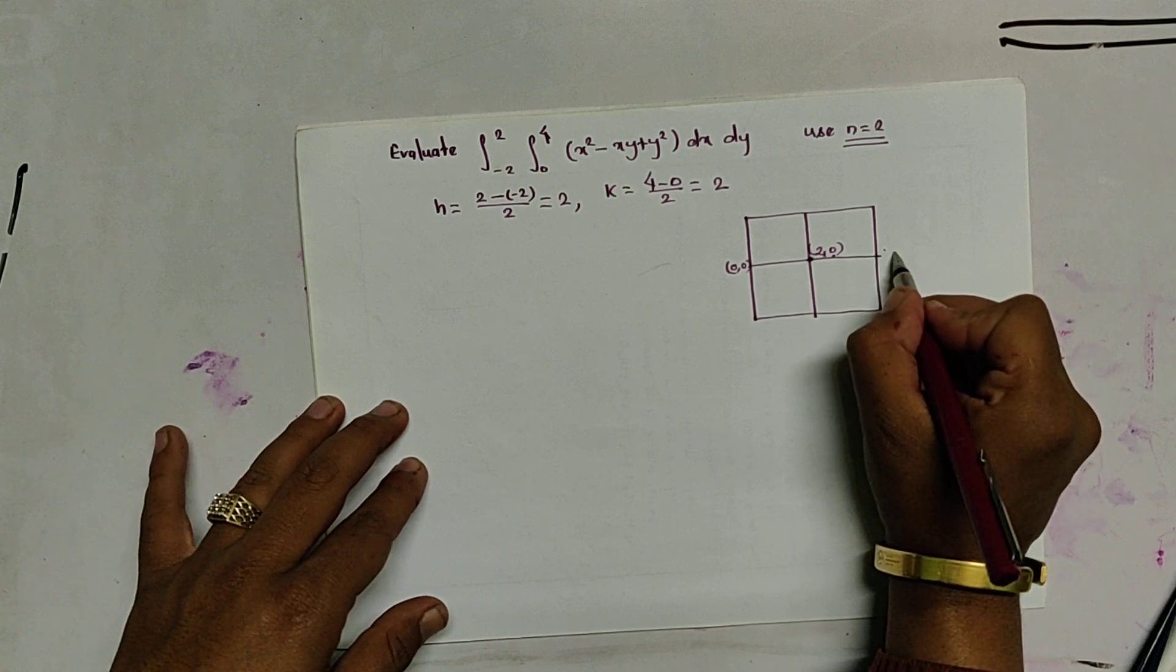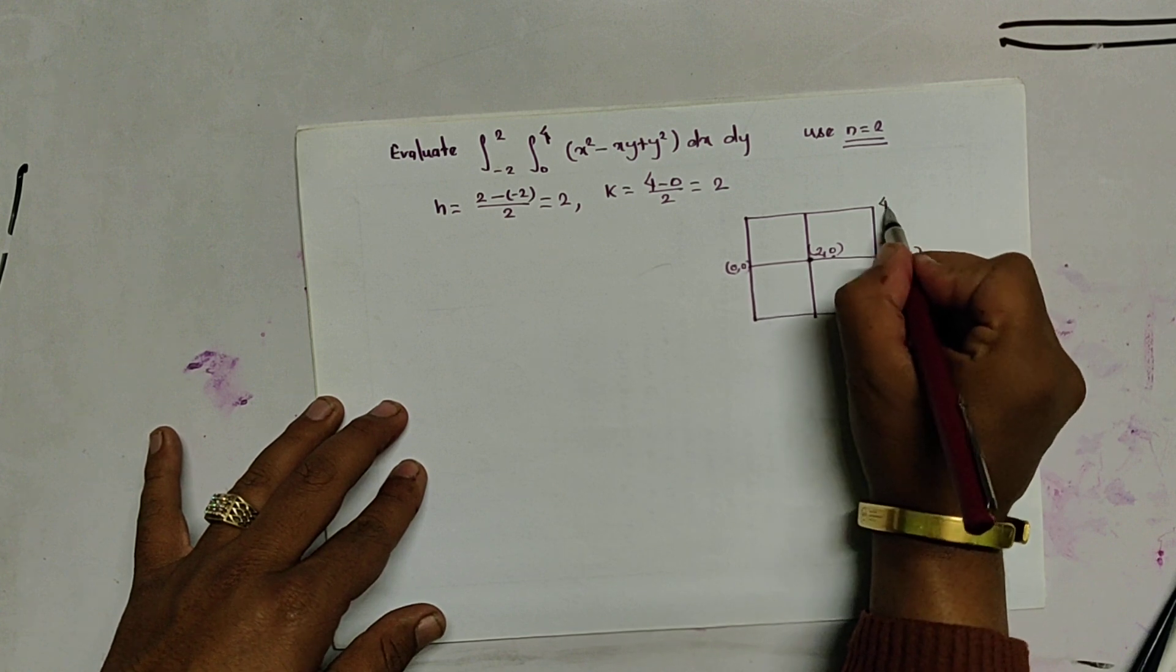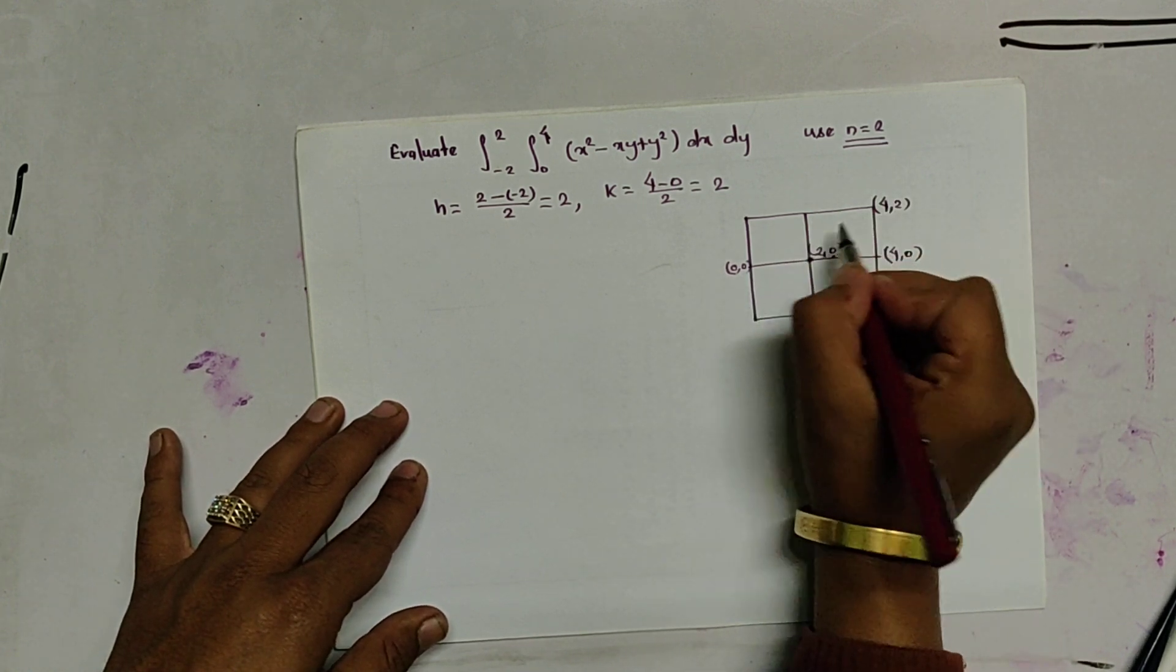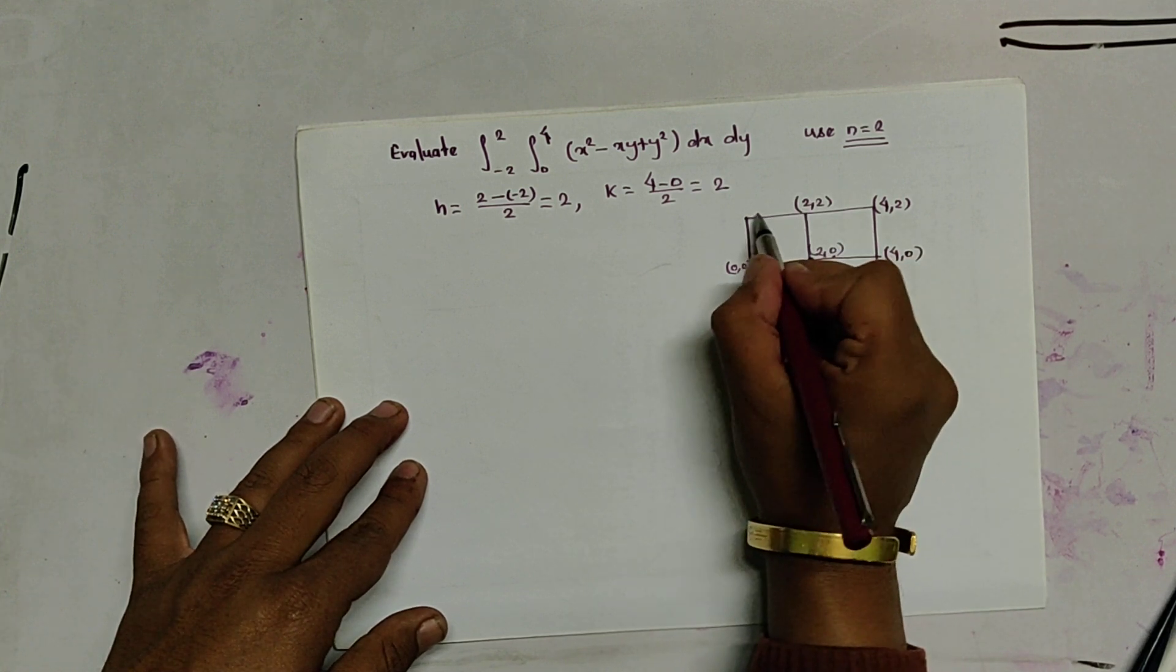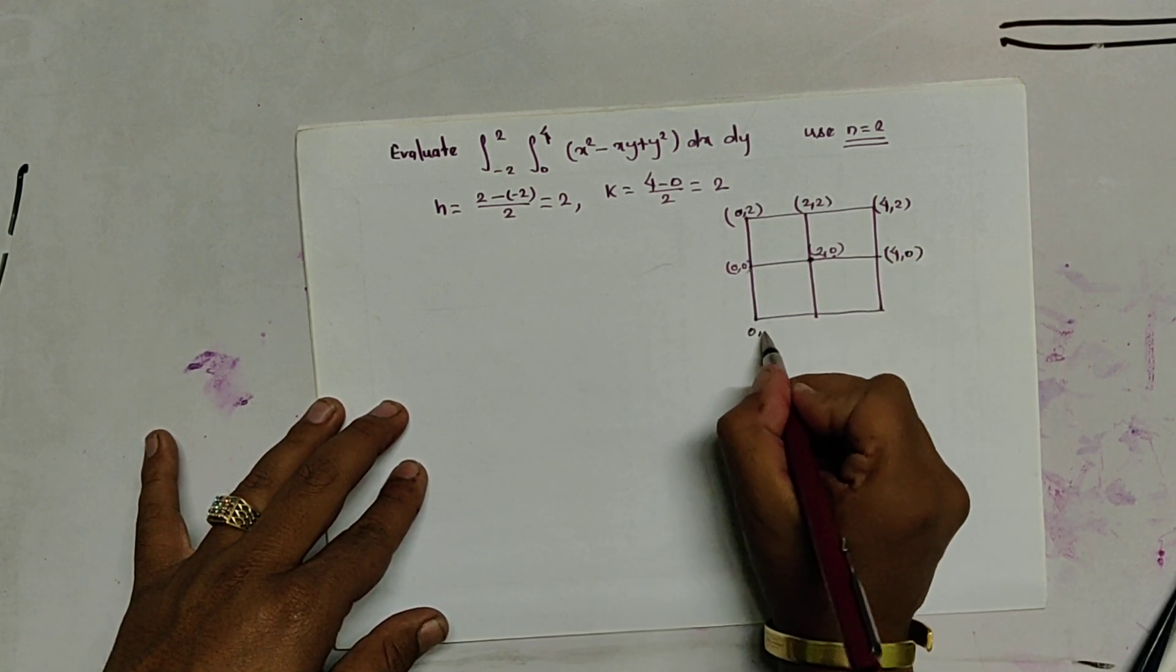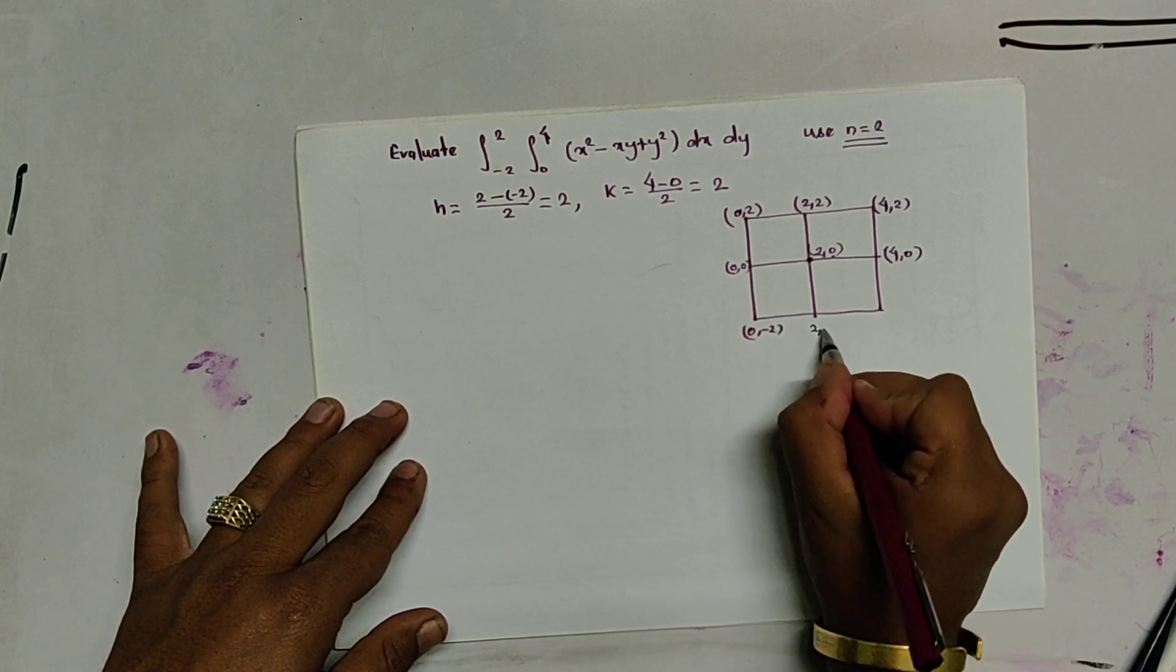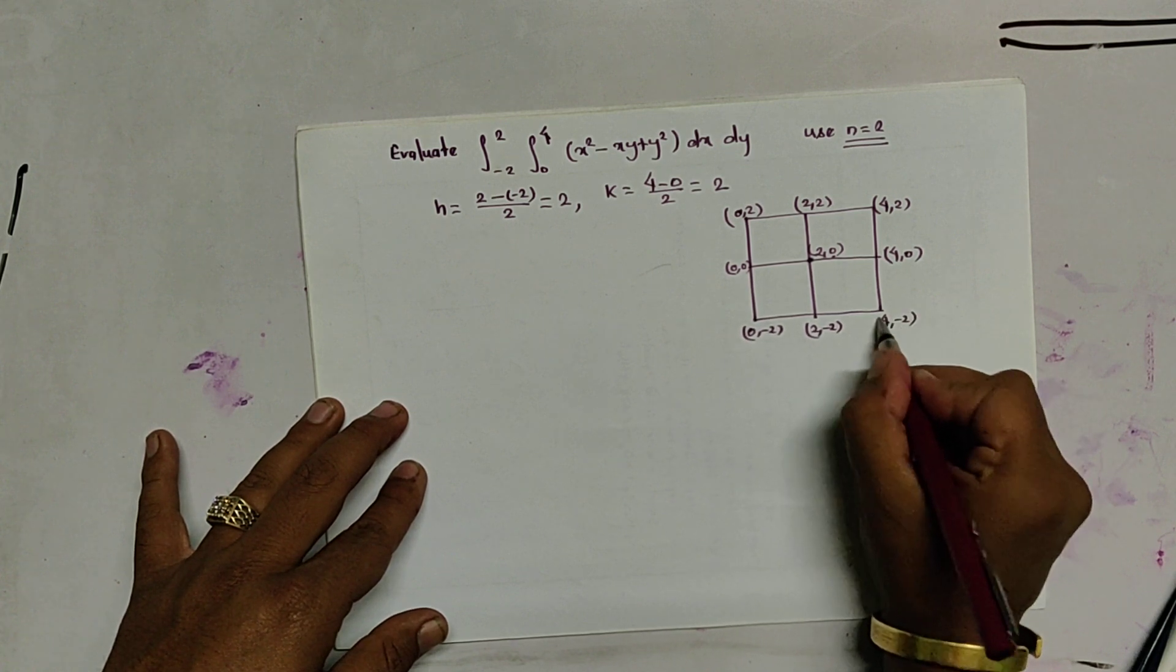Again, it becomes 4, 0. It becomes similarly, 4, 2. It is 2, 2. It is 0, 2. It is 0, minus 2. It is 2, minus 2. It is 4, minus 2.